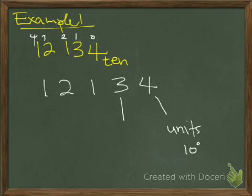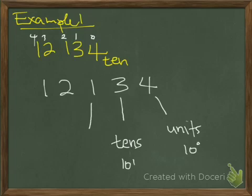The value of 3 here is 10 to the power 1 — these are called tens. 10 to the power 1 equals 10. The value of 1 here is 10 to the power 2, which means it's 100, so these are hundreds.